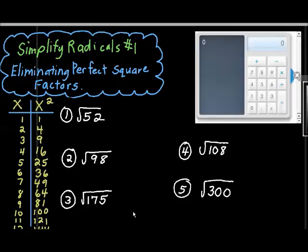This first video is to go over simplifying radicals, and we're just going to cover how to eliminate perfect square factors. One of the rules with radicals is that you cannot have a perfect square go into the radicand.